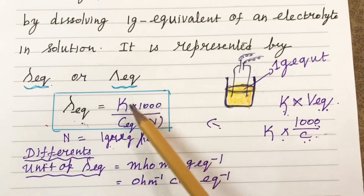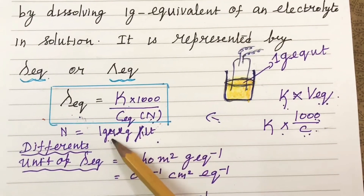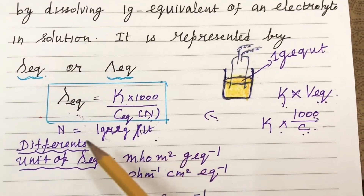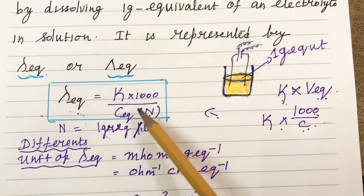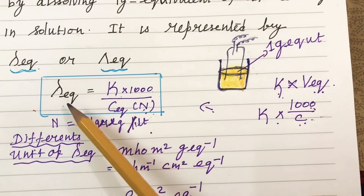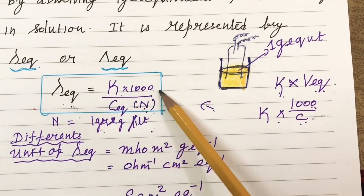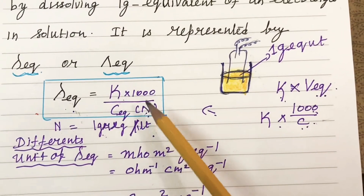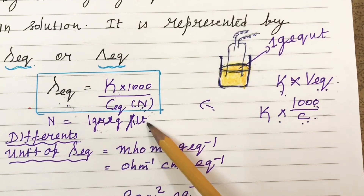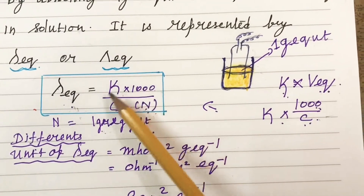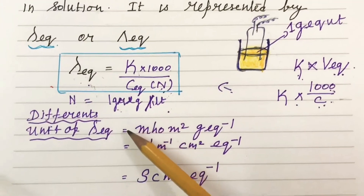The formula for equivalent conductance is: lambda equivalent equals kappa into 1000 divided by N, where N is normality — that is, 1 gram equivalent weight of the substance in 1 liter or 1000 ml. Kappa is the conductivity of the solution. This gives the value of equivalent conductivity, lambda equivalent.